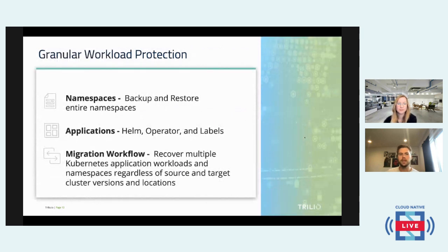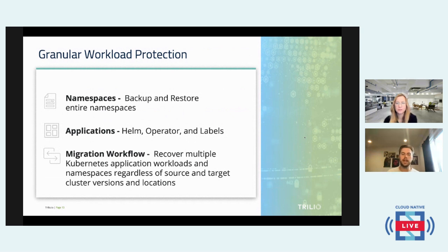Moving to granular workload protection: you want to be able to protect your applications at the namespace level — migrate entire namespaces or back up a namespace in case of data loss when transferring from core to edge. Beyond namespaces, we've added extra functionality for application backup itself. You can back up based on Helm operator labels and select which Helms and operators you want to backup within a certain namespace. Getting very granular — many of us are familiar with labels and keeping them organized with our workloads. You want a backup solution that allows selecting individual labels to reach that granular level.